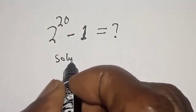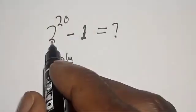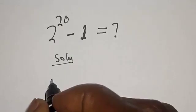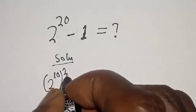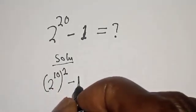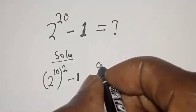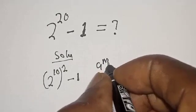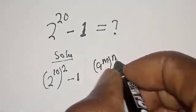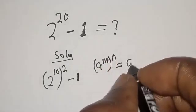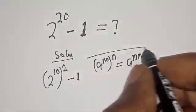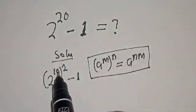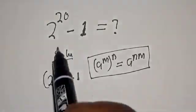Solution: 2 raised to power 20 can be written as 2 raised to power 10 square minus 1. Remember that a raised to power m to the power of n is equal to a raised to power nm. If you multiply 10 by 2 you get 2 raised to power 20 back.